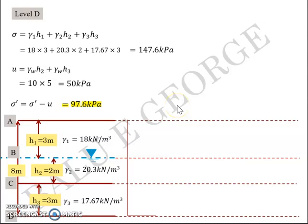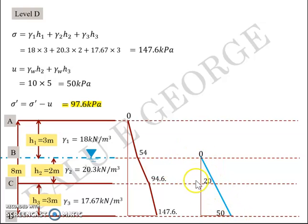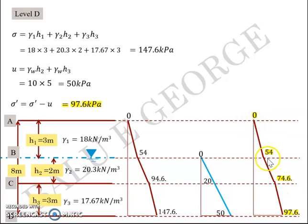Plotting the distributions: total stress varies from 0 at A, to 54 at B, 94.6 at C, and 147.6 at D. Neutral stress starts at zero at the water table (level B), increases to 20 at C, and 50 at D, varying linearly. Subtracting the neutral stress from total stress gives effective stresses: 0 at A, 54 at B, 74.6 at C, and 97.6 at D.